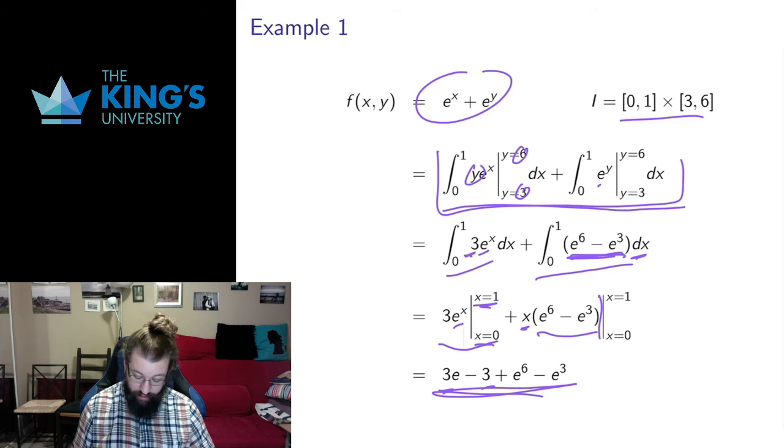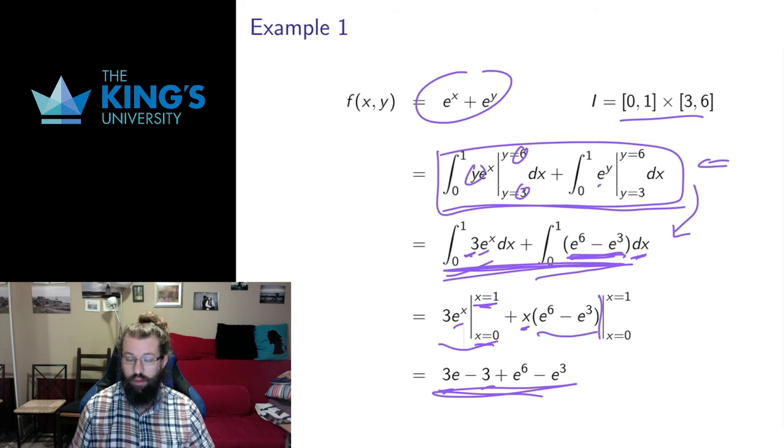Please notice at this step, the y variable is gone. So as soon as I do an inside piece with a certain variable, that variable should not show up in this step. The only variable that should remain is the x variable, and then when I evaluate in the x bounds, the x variable is gone and I just have a constant left.